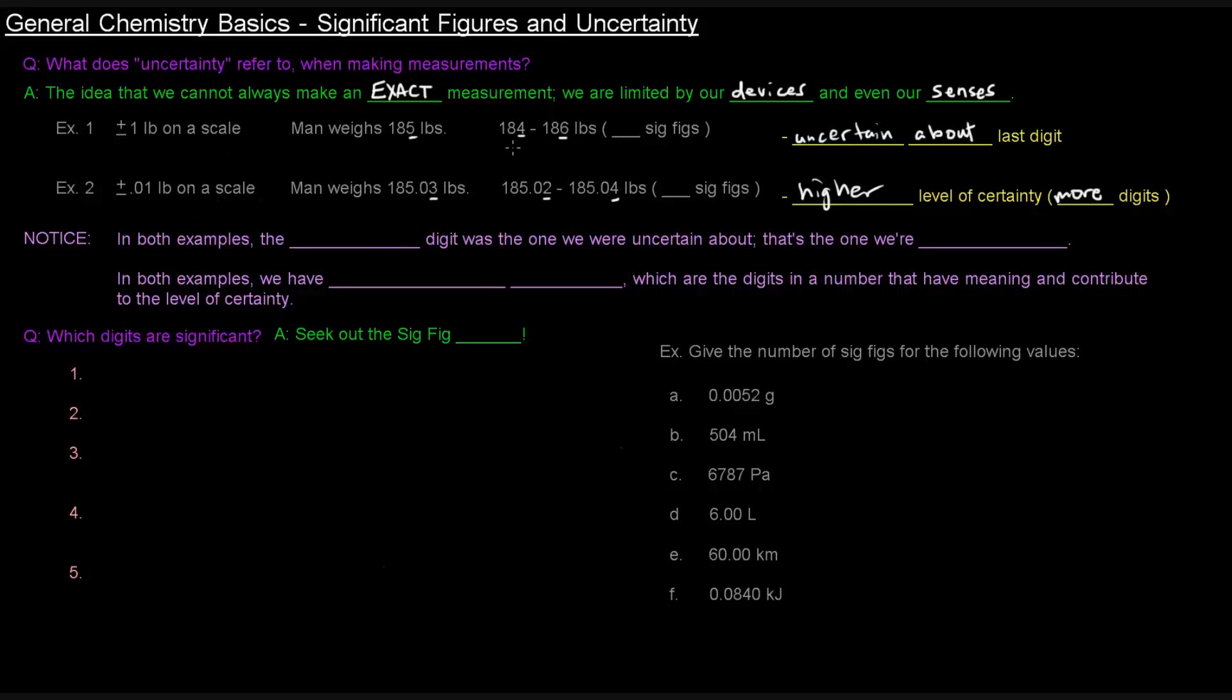In both of these examples that are mentioned here, the rightmost digit was the one that we were uncertain about, that's the one we're estimating. In both of these examples, we have what's called significant figures, which are the digits in the number that have meaning and contribute to the level of certainty.